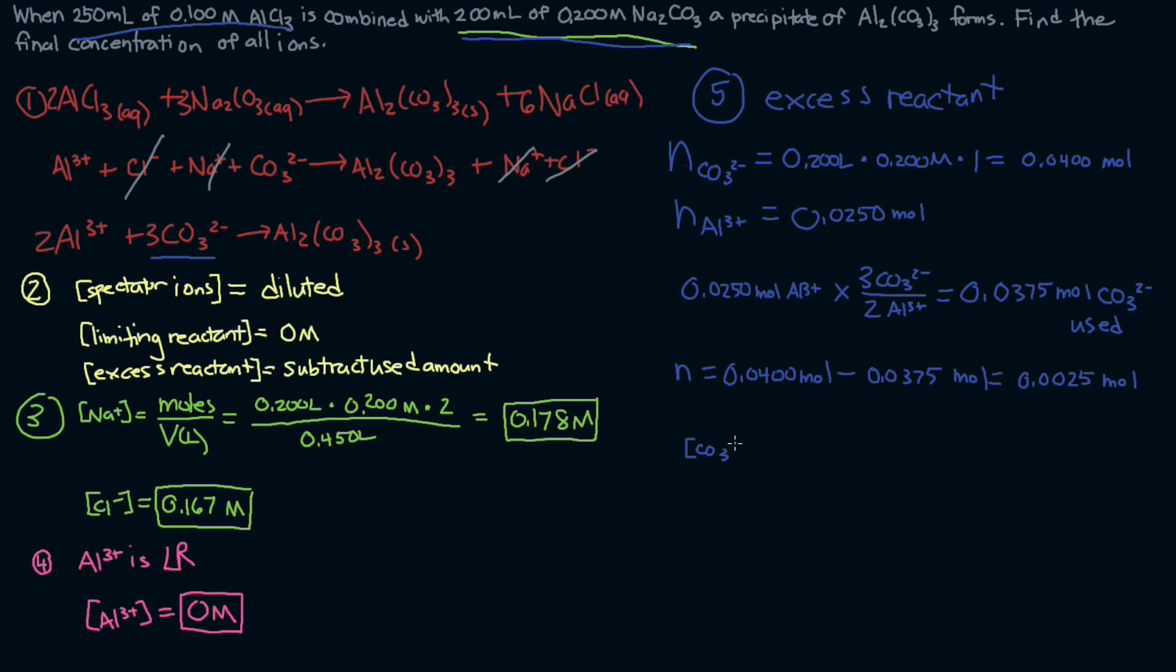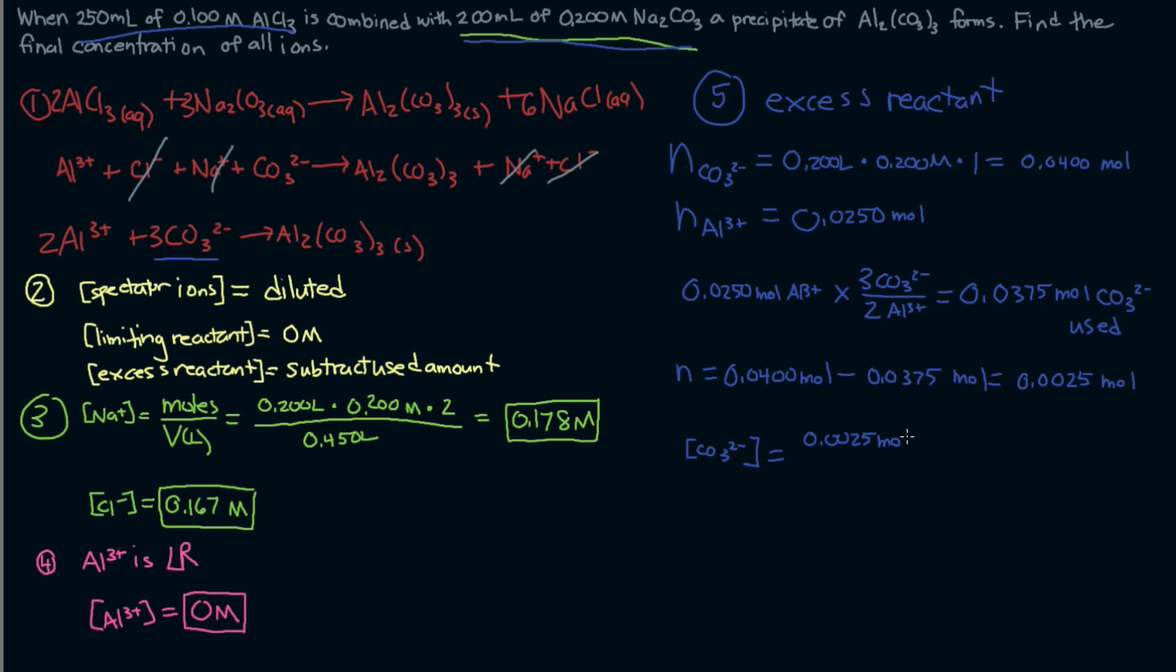Last step, finding the actual concentration of carbonate. We take the number of moles that we found, 0.0025 moles, and divide by the total volume, 0.450 liters. And we get a concentration of 0.006 molar, our final answer.